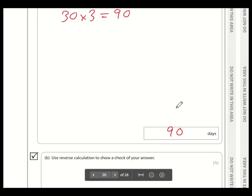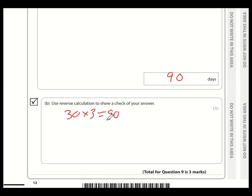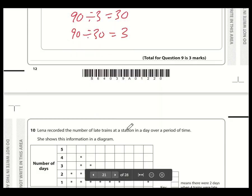Use reverse calculation to show a check of your answer. Well, the question was 30 times by 3 is 90, which is fairly unlikely we would have got this wrong. But if you wanted to check it, we could do 90 divided by 3 equals 30 or 90 divided by 30 equals 3. Why you would do that, though, is kind of beyond me, really, because these calculations are kind of harder. Division is harder than multiplication. And as I said, it's unlikely you would have got that wrong anyway. But there we go. That's what they're looking for.